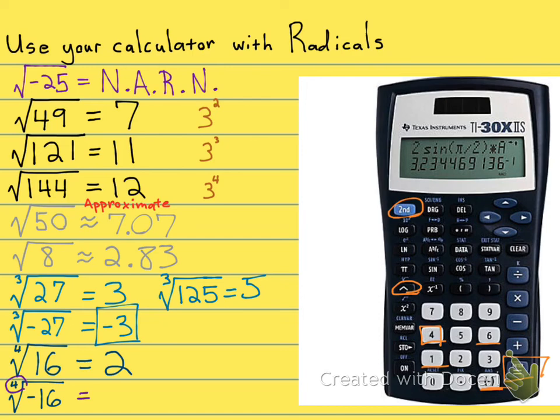Okay, if your index is an even number, like a square root, a 2, or a fourth root, you can't have a negative inside. It's not a real number, and your calculator gives you a domain error. N.A.R.N., not a real number.